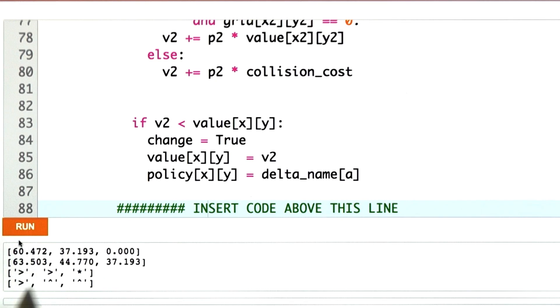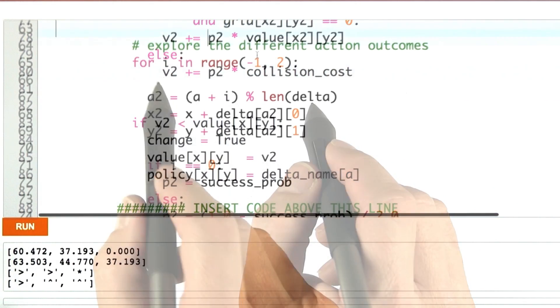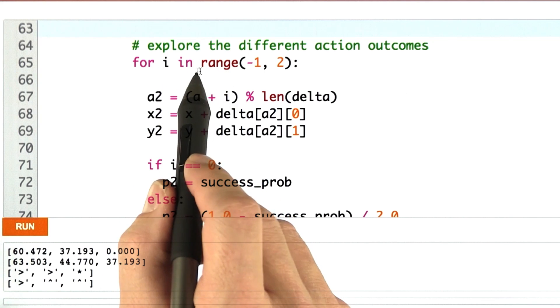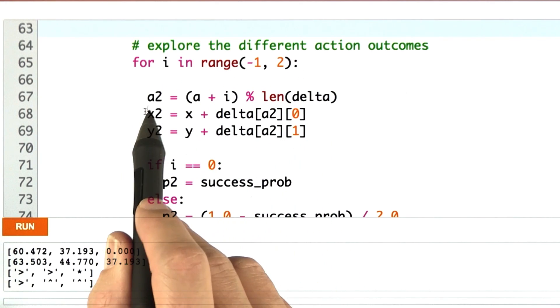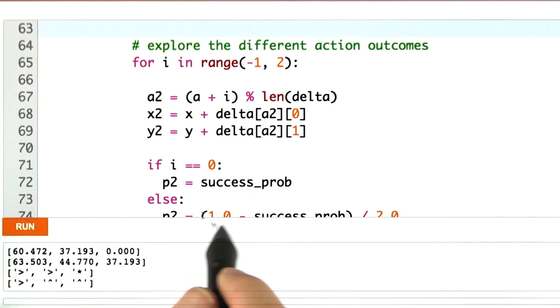This is what you should have programmed. And the key difference to our example in class is the inner loop over here where I go over different possible action outcomes, compute the actual action outcome, and then do the probabilistic addition of these outcomes rather than just studying one outcome.